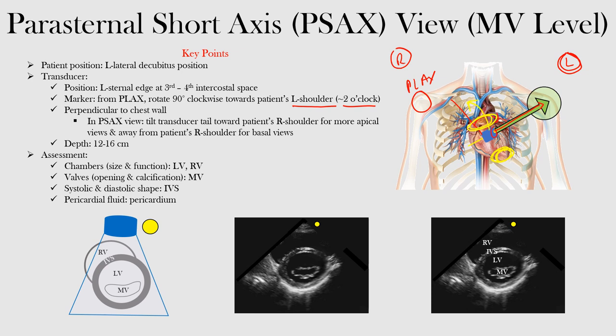Tilting can give you either more apical or basal views. The apex of the heart is here, whereas the base of the heart is here. If we want to look more at the apex, we tilt the transducer towards the patient's right shoulder. If we want more basal views, as we did in the aortic view, we tilt it away from the patient's right shoulder and almost towards their left hip.